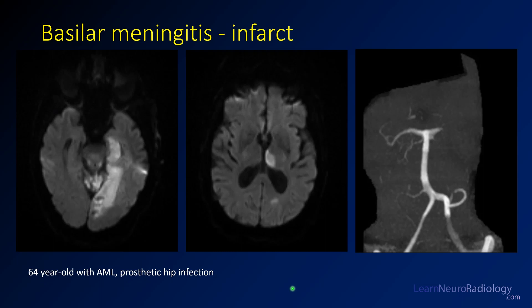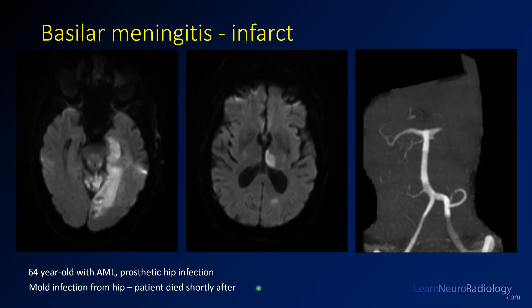This patient went on to develop infarcts: on diffusion there is infarcted tissue in the superior cerebellum, medial temporal lobe, and thalamus. The left PCA is occluded. This patient had a mold infection related to a hip prosthesis, and it was a fatal condition.